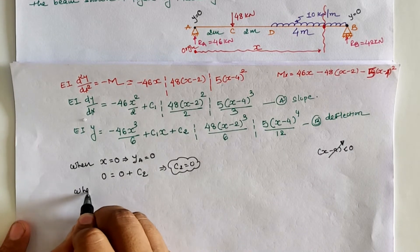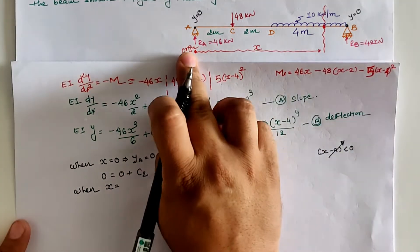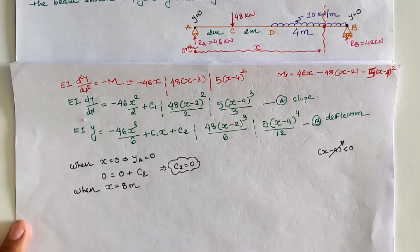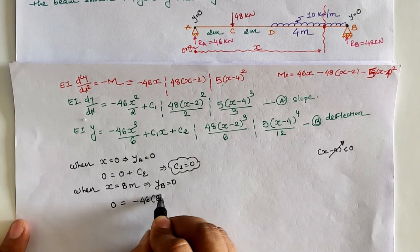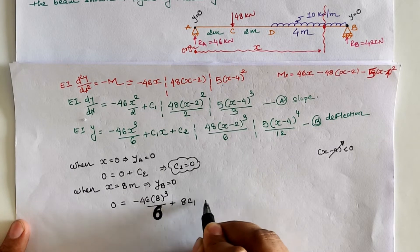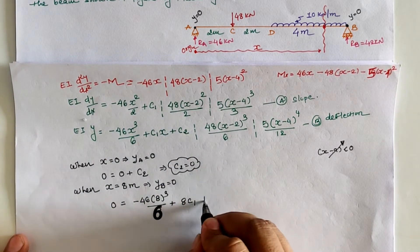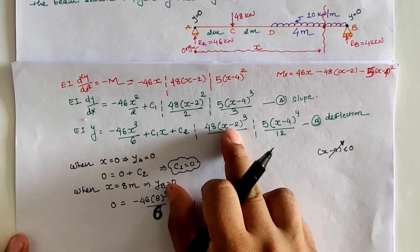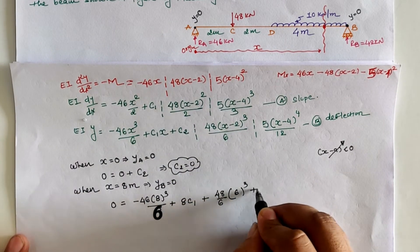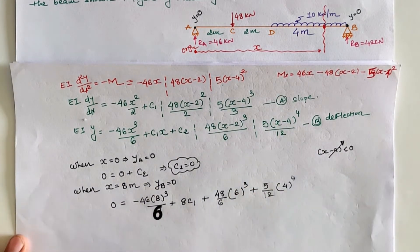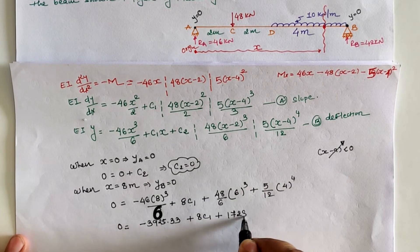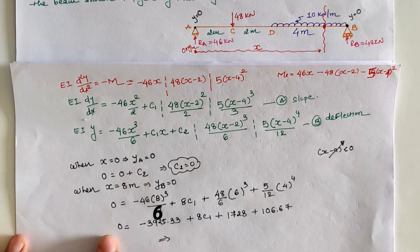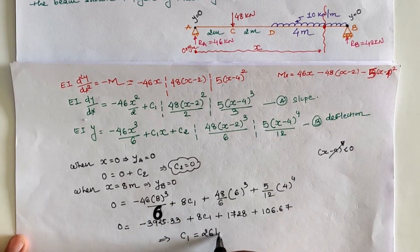The second boundary condition is at location B where x equals 8 m, y equals 0. Substituting x equals 8 into Equation B: EI·y equals zero. The term 8 cubed over 6 plus 8·C1, C2 is zero, minus 48/6 into (8 minus 2) cubed, plus 5/12 into (8 minus 4) to the power 4. Solving this equation gives C1 equal to 261.33.